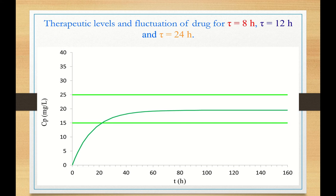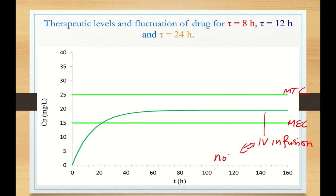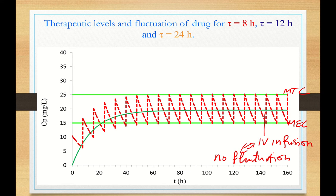Let us now see the zero fluctuation. Here, the lower boundary is the mean effective concentration and the higher boundary is the mean toxic concentration. This is the IV infusion, as you can see with the green continuous line — constant rate. There is absolutely no fluctuation.